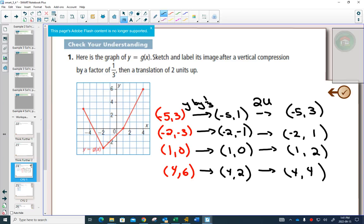Now we can plot those points. Where's negative 5, 3? That's weird that it ends up in the same place as it started. But negative 2, 1. 1, 2. And 4, 4. Join your dots together. Does it look like it's been squished vertically and then shifted up? Seems to make sense. The shape appears to be that way.